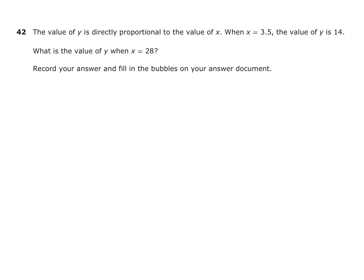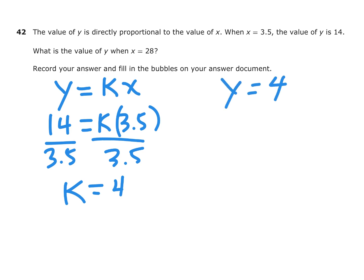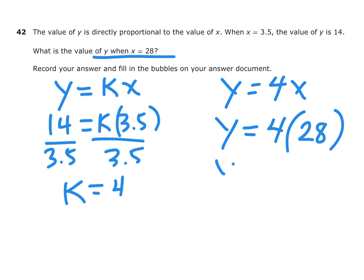Number 42: The value of y is directly proportional to the value of x, so y equals kx. When x is 3.5, the value of y is 14. We can find k by dividing: 14 divided by 3.5 using your calculator is exactly 4. So we have y equals 4x. What is the value of y when x is 28? We already know k is 4, so y equals 4 times 28, which is 112.